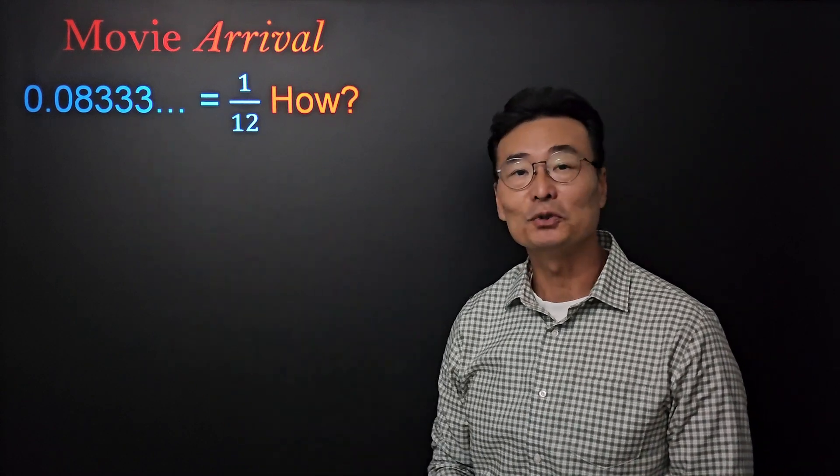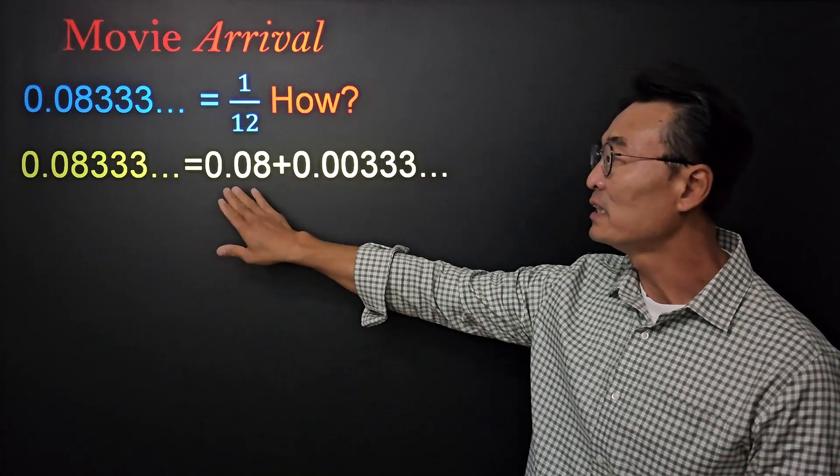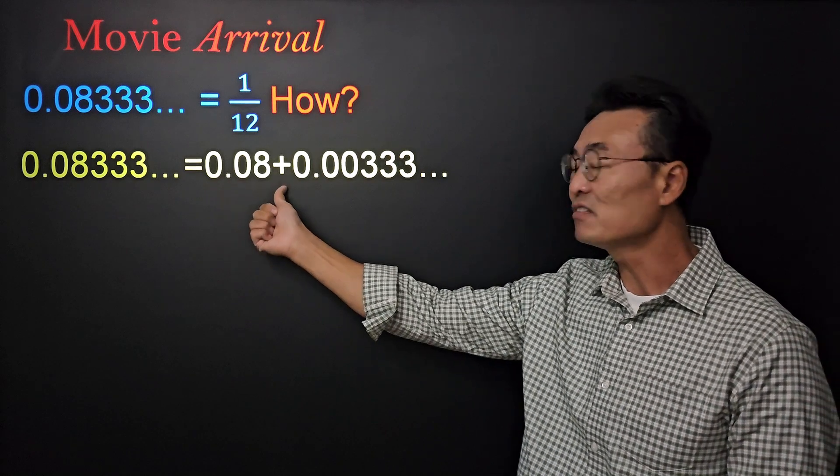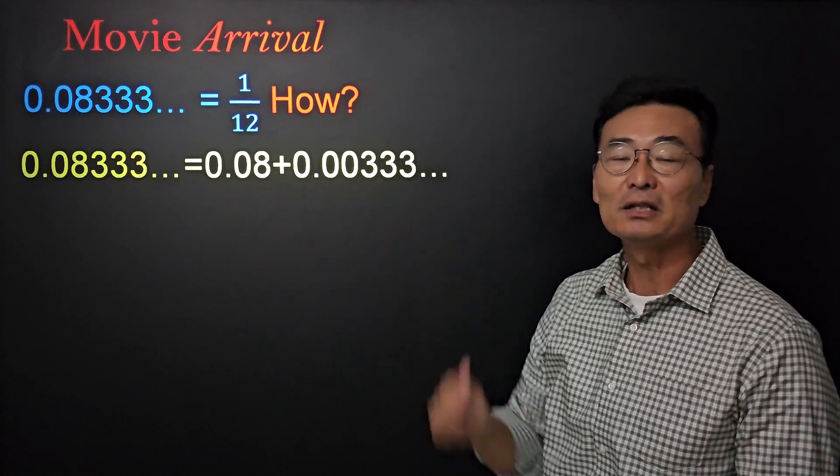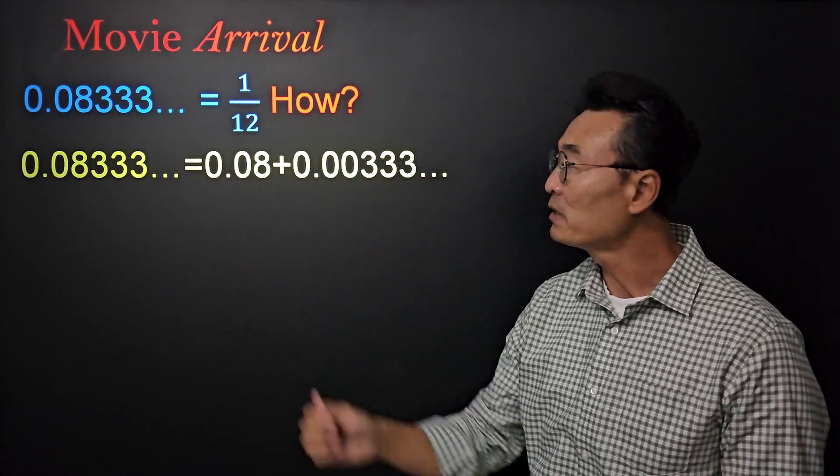First, we want to rewrite it so that it equals 0.08, the non-repeating portion, plus the 0.003 repeating portion. We'll take care of that 0.08 in a minute. First, let's focus on the repeating portion.